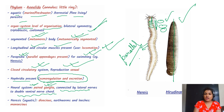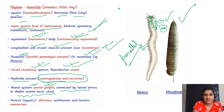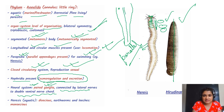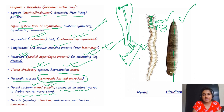The neural system consists of paired ganglia connected by lateral nerves to a double ventral nerve cord. The ventral nerve cord runs through the body, and at the head there are two pairs of ganglia connected by lateral nerves which also connect to the dorsal nerve cord.